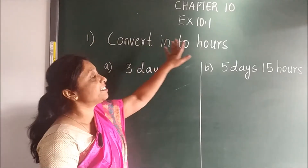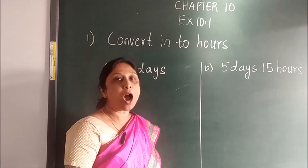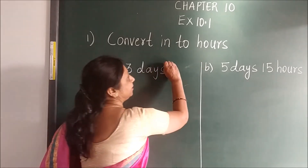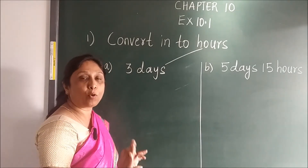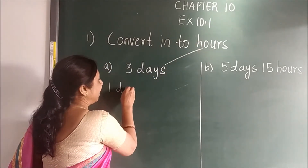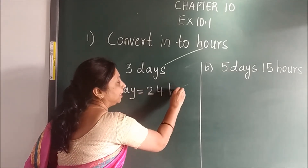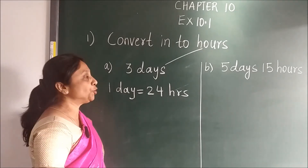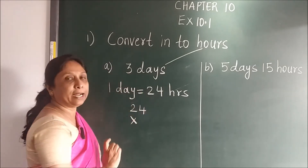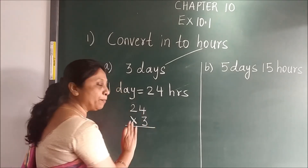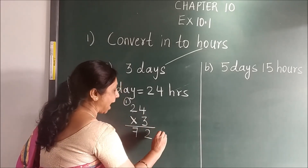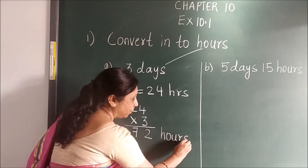Now here in exercise 10.1, first question is convert into hours. Here it is given 3 days. You have to convert days into hours. For this, first you have to write the relation of days and hours. So 1 day has 24 hours. After writing the relation, you write 24 hours and multiply by the number of days. Simple multiplication: 3 fours are 12, then 3 twos are 6 plus 1 is 7. So you will have 72 hours.